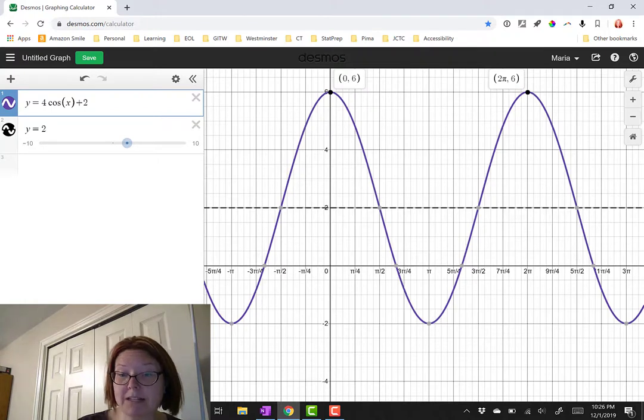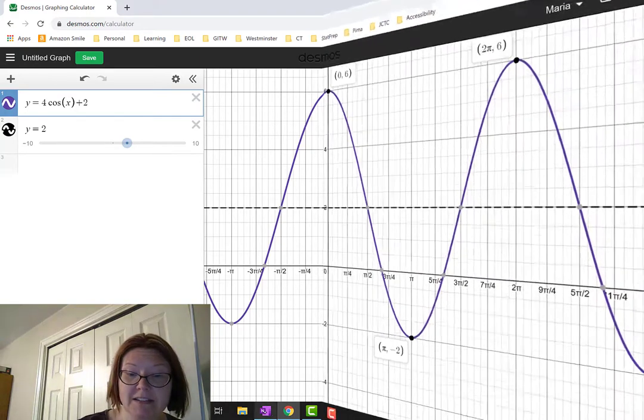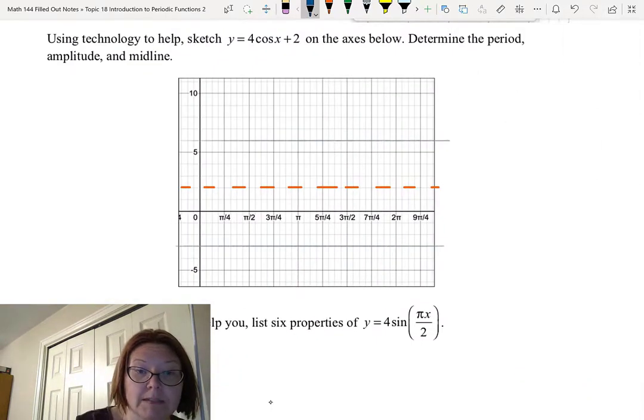The middle of that cycle occurs at the minimum value of pi, negative 2. So let's draw those points next. So those are points at 0, 6, 2 pi, 6, and pi, negative 2.